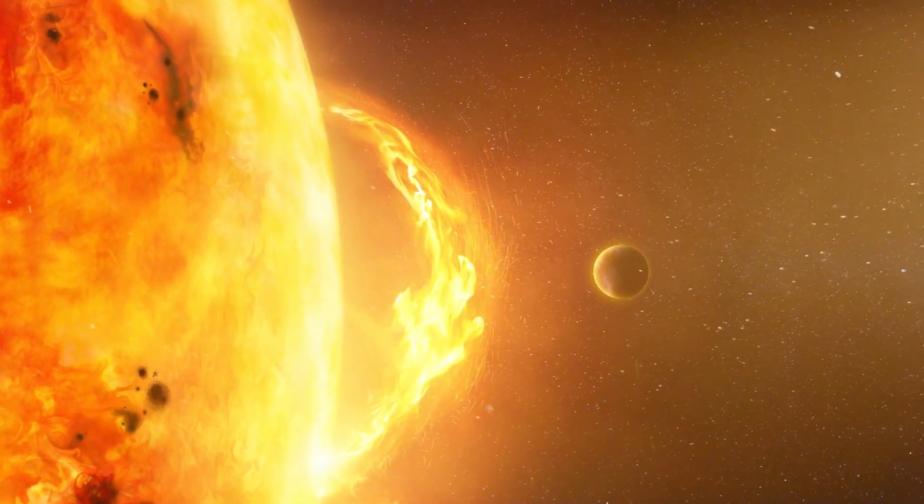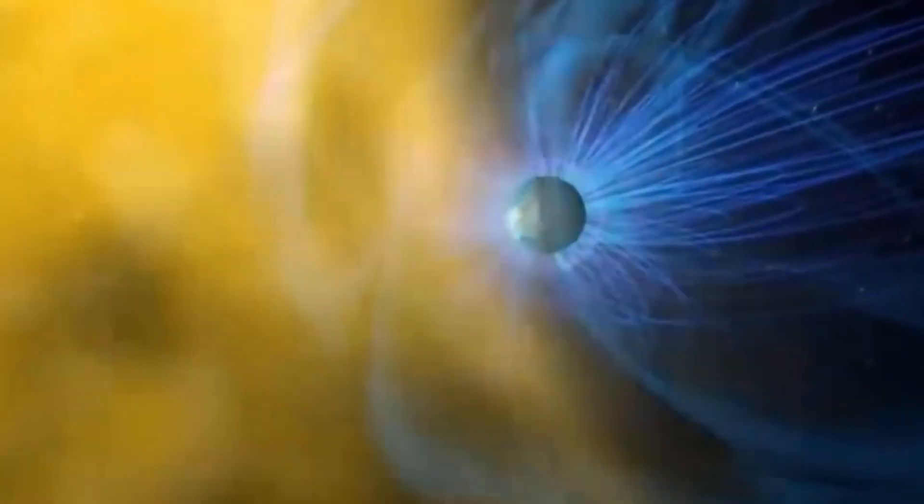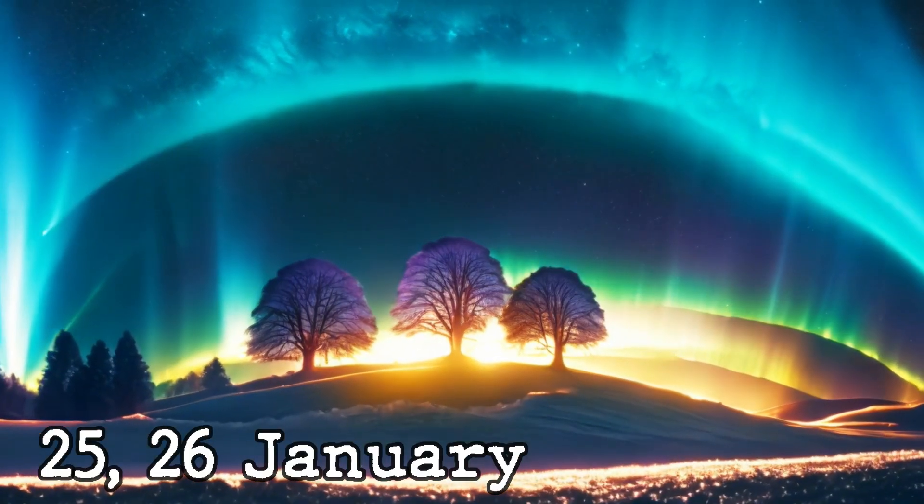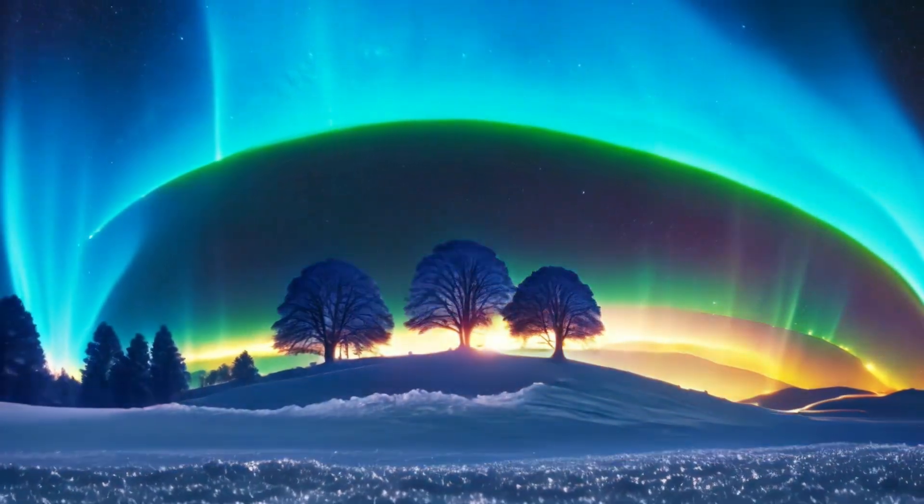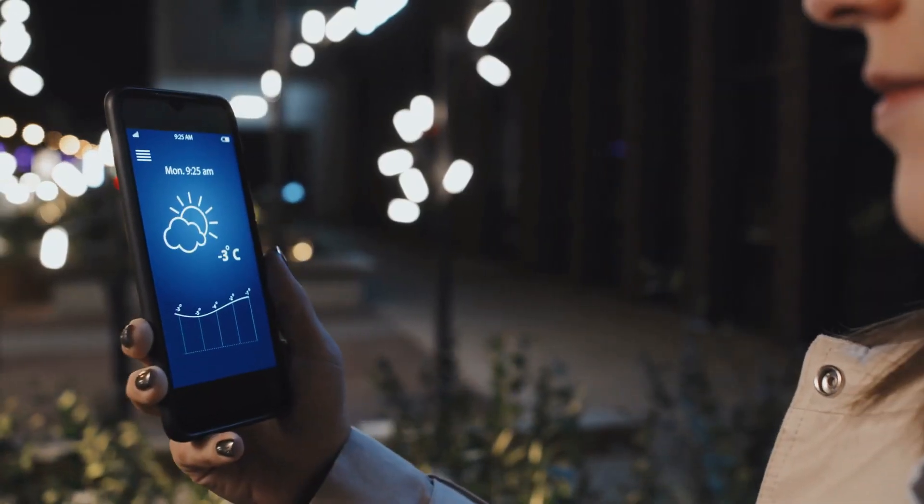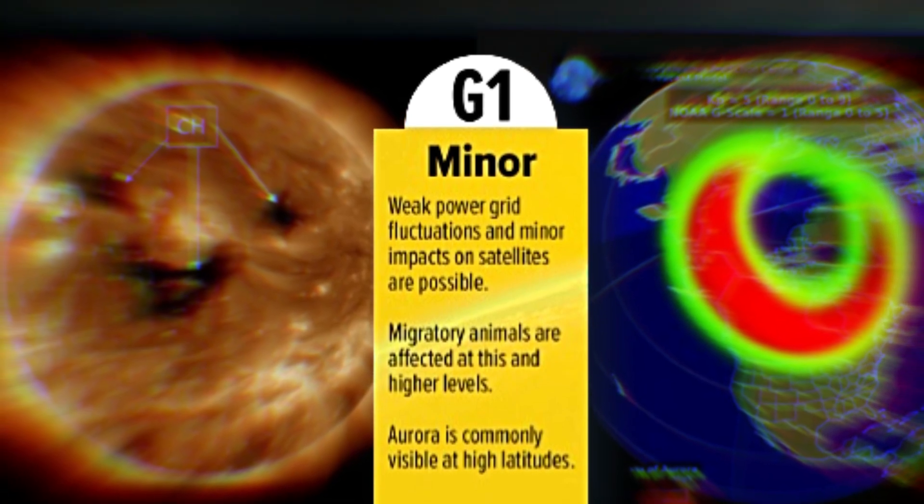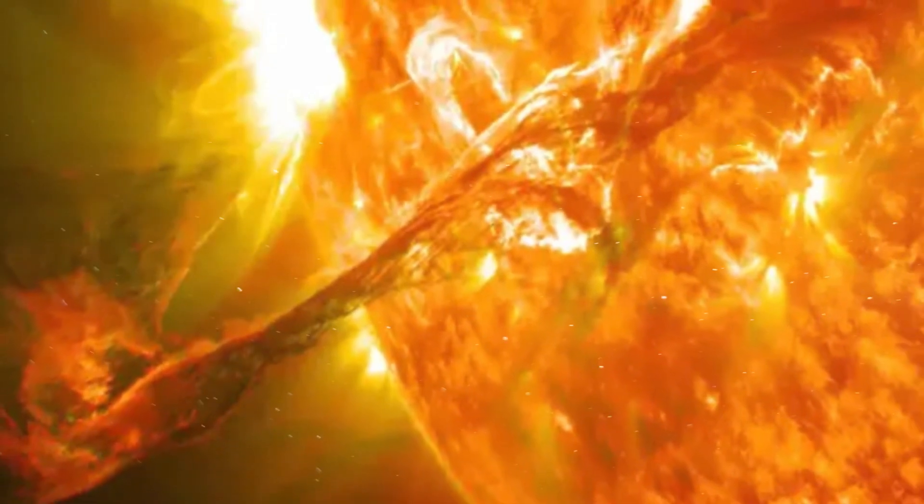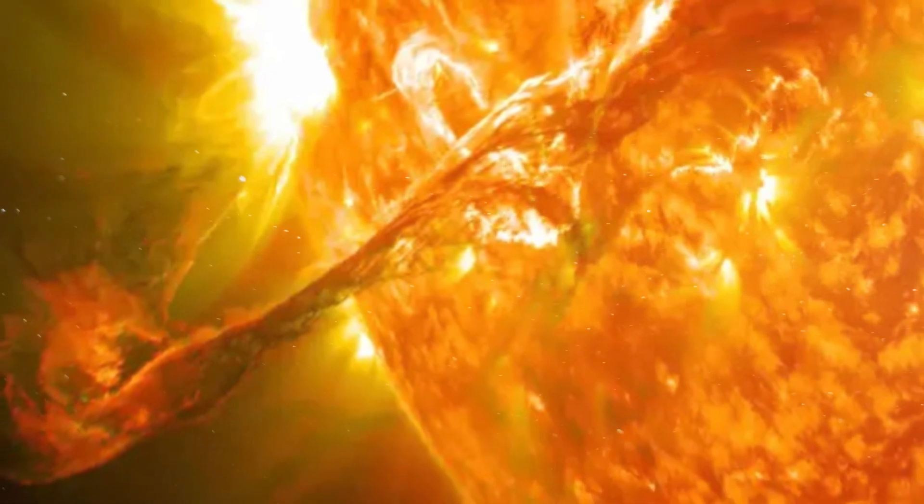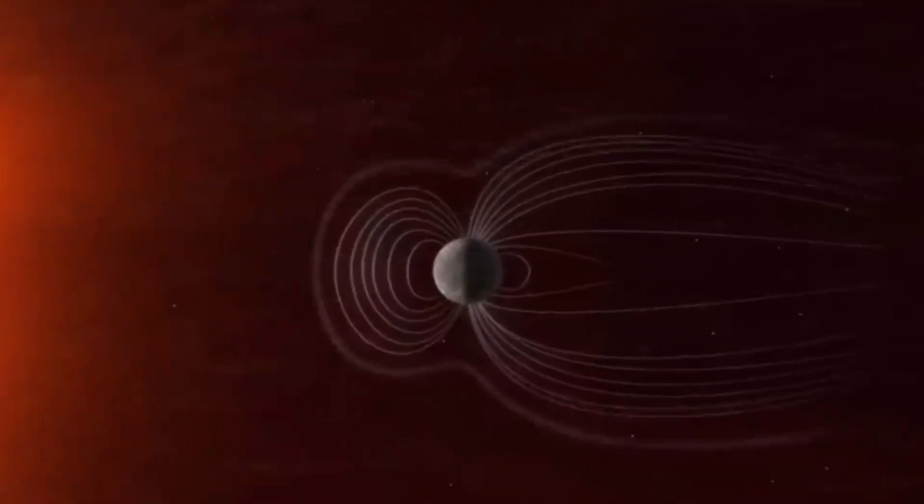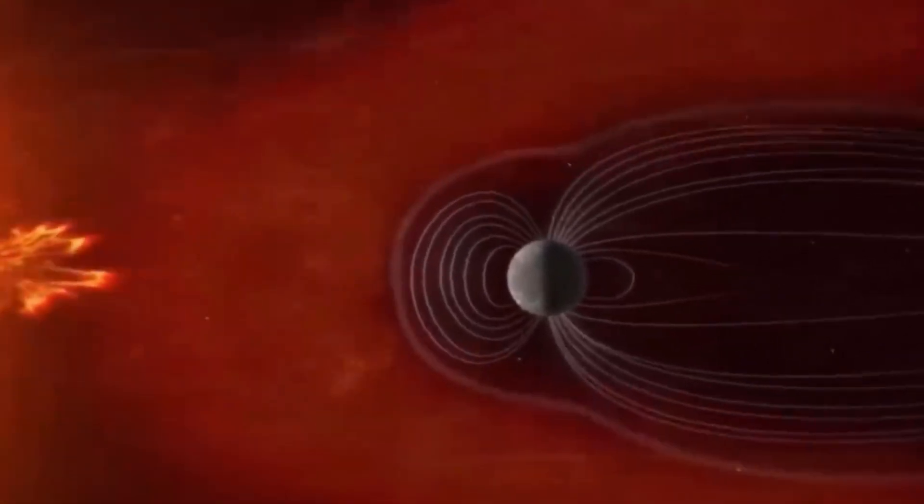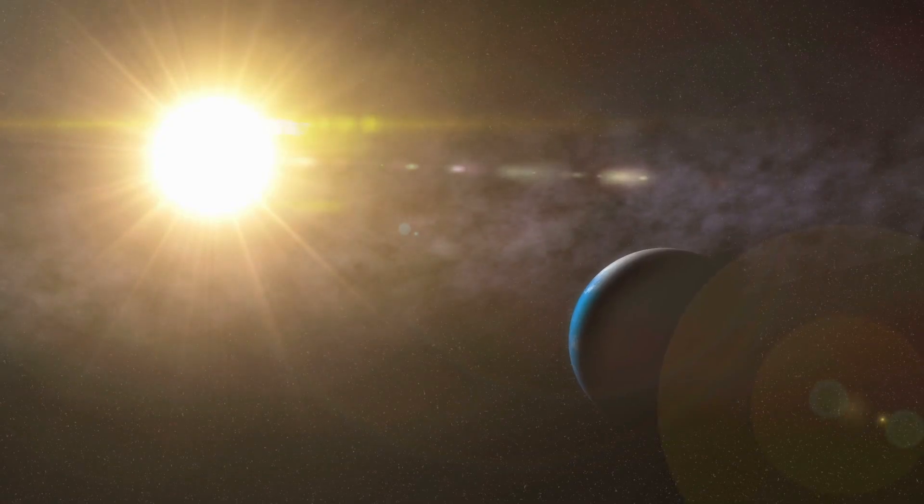Results of this analysis show potential impacts at Earth as early as late in the day on January 24th, with more likely impacts on 25 and 26 January 2024. As a result, forecasters currently anticipate G1 minor geomagnetic storm levels over these three days, with higher storm levels possible if a more direct impact or stronger connection with Earth's magnetic field lines occurs. As of now, nothing has happened.